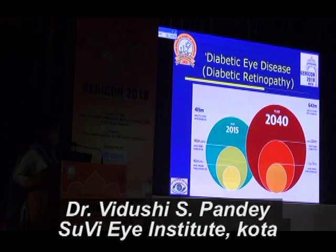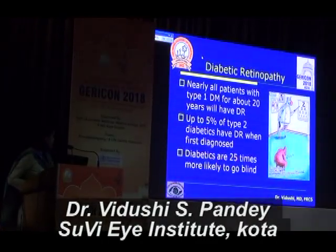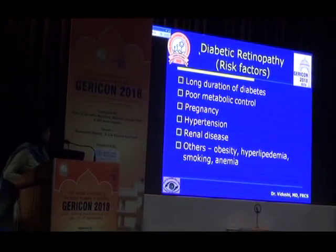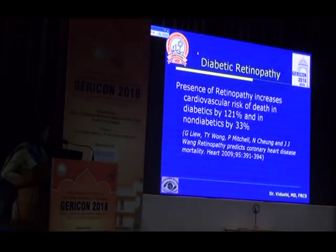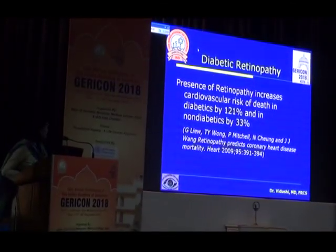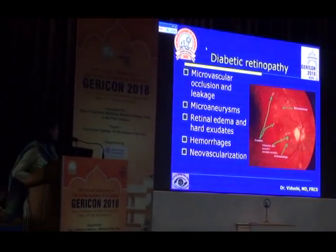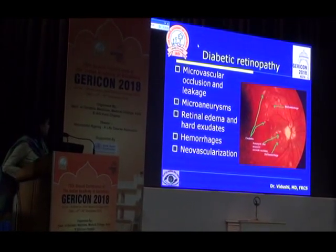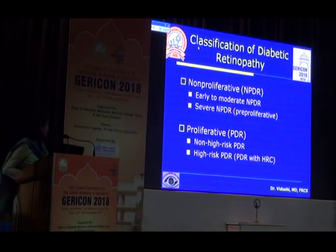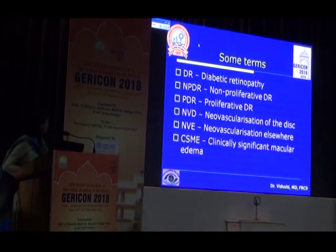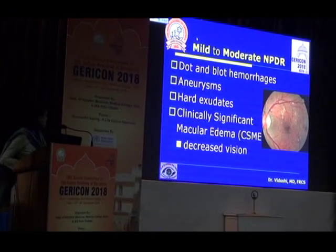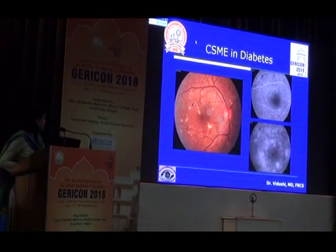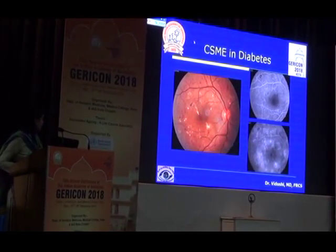Diabetics is the next big problem. Diabetics are 25 times more likely to go blind. Risk factors include long duration, poor metabolic control, co-existent problems like hypertension and kidney disease. If you have diabetic retinopathy, the risk of cardiovascular death also increases. The changes seen in diabetic retinopathy include exudates, microaneurysms, and hemorrhages. There are two kinds: non-proliferative and proliferative diabetic retinopathy. In non-proliferative diabetic retinopathy you see hard exudates and macular edema. This leakage is seen on fluorescence angiography.